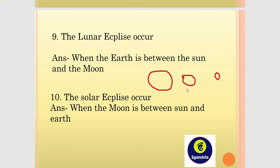The lunar eclipse occurs when the earth is between the sun and the moon. The solar eclipse occurs when the moon is between the sun and the earth.